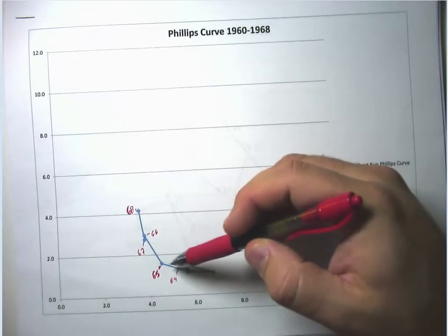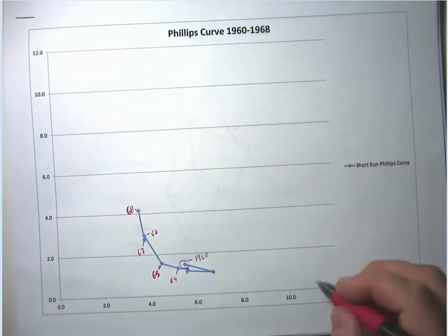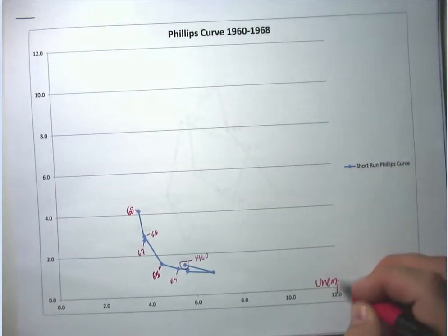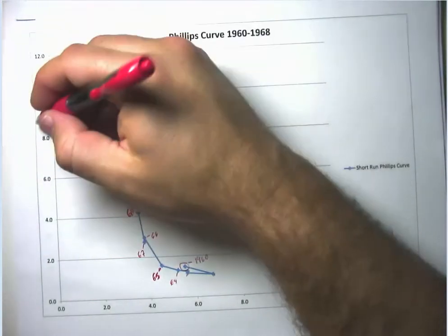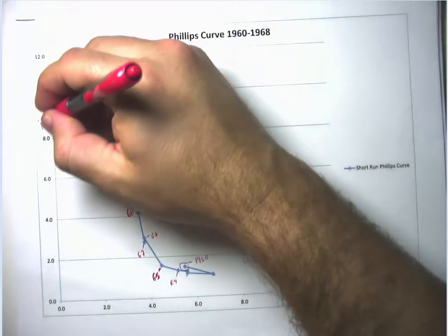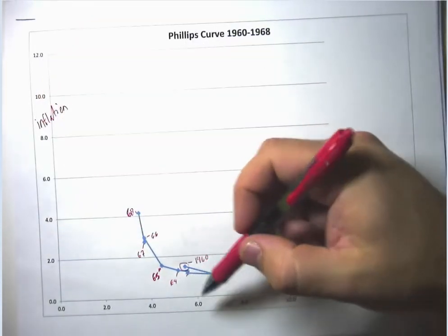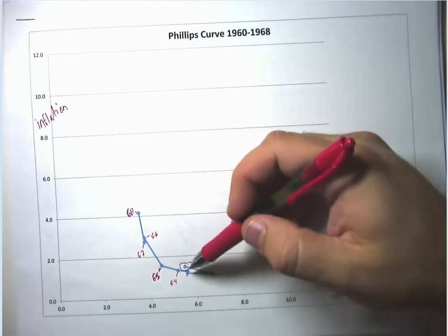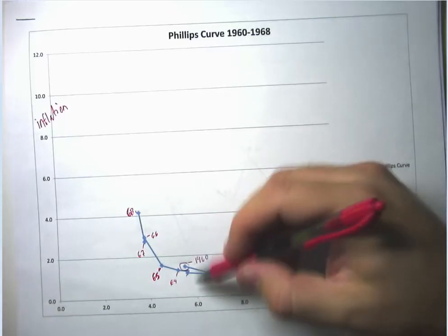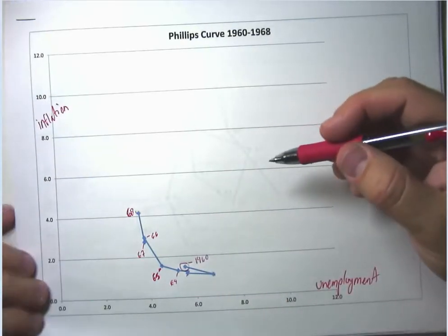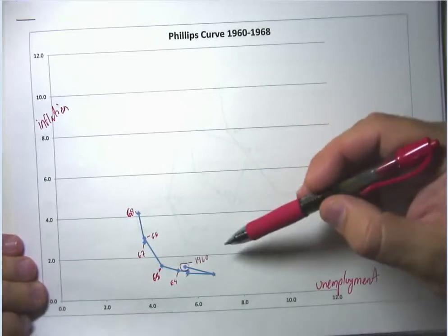This sort of Phillips curve thing, it doesn't quite 100% make sense theoretically because we tend to think that real economic variables, like the unemployment rate, can't be influenced in the long run by purely nominal variables, things like monetary policy or the inflation rate. So he sort of comes up with this idea that the short run Phillips curve can't be all there is and there is such a thing as a natural rate of unemployment.